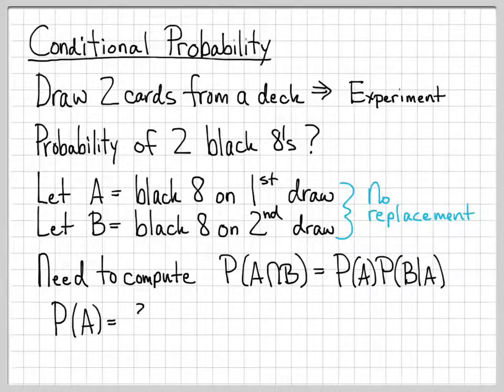So what's the probability of event A? Well, that's two out of 52. Initially in my deck of 52 cards, there are two black eights, so if I just draw one at random, I have two chances out of 52 to draw one of the black eights. So that's a fairly straightforward one.